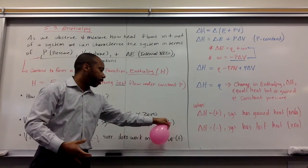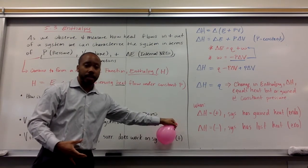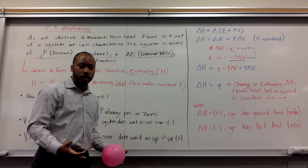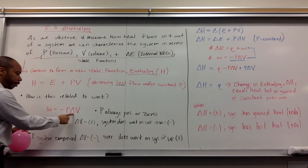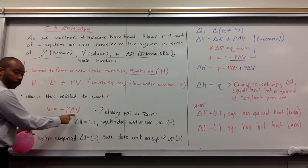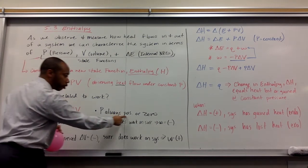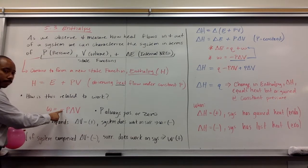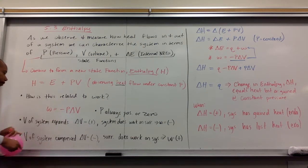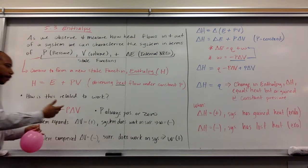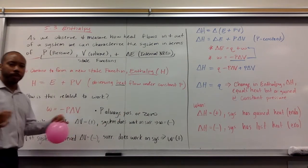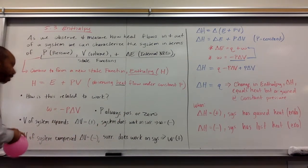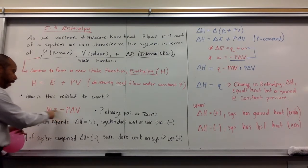If p is always positive or zero, when the volume of the system expands, the system does work on the surroundings, which is the atmosphere outside the balloon. So work is considered to be negative. Why negative? Well, mathematically, if your delta v is positive, a positive number times a constant pressure that's either positive or zero will give you a negative number.